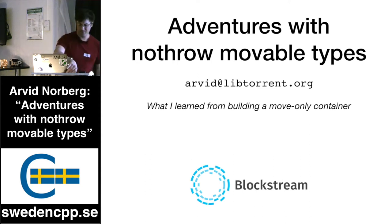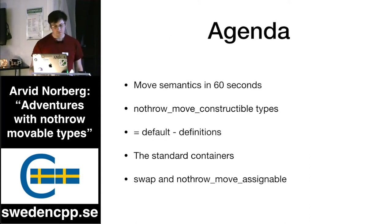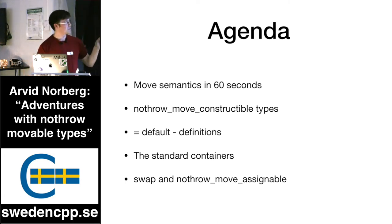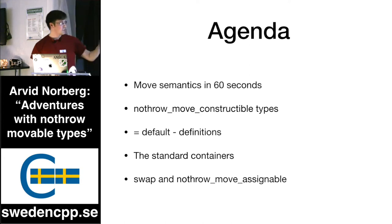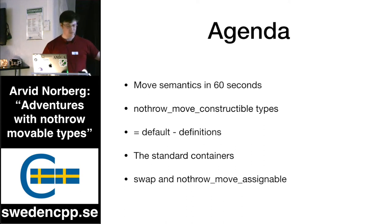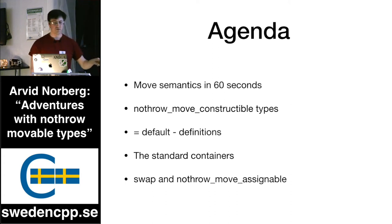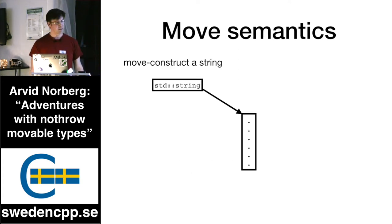The brief agenda is a 60-second introduction to move semantics, maybe a little bit more than that. The idea of no-throw movable constructable types and the type traits. The equals-default definitions or declarations. Some of the standard containers and how they fit into this topic. And also swap and no-throw move assignable — it turns out those are sort of related to each other. So let's start with move semantics.